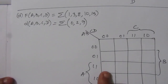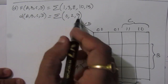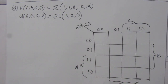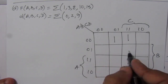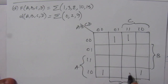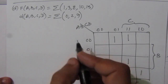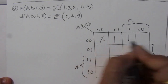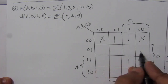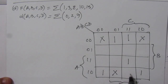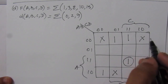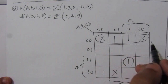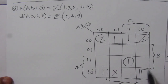Now let us solve the fourth part of the problem. We have this given function and these are the don't care conditions. Let us fill up this four variable map. Minterms 1, 3, 8, 10, 15 are placed. Positions 0 through 15 are mapped. The don't care conditions are 0, 2, and 9. After placing, the only isolated term cannot be combined with any other term, and then we can combine the corner values.